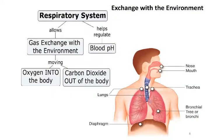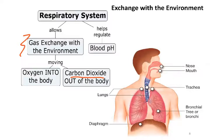The other system involved with exchanging materials with the environment is the respiratory system. In a way, it has a singular function, which is gas exchange with the environment — moving oxygen into the lungs, from the lungs into the body, and moving the waste gas carbon dioxide out of the body. Because of the way that carbon dioxide is transported in the bloodstream, the respiratory system is also involved in regulating the pH, or acidity and alkalinity, of blood.